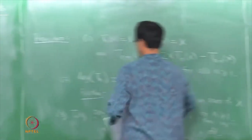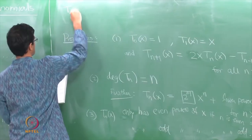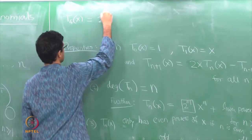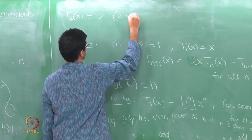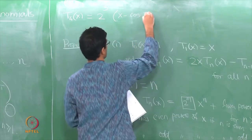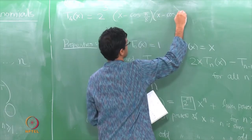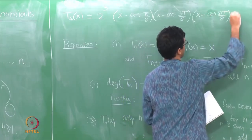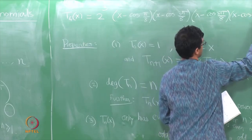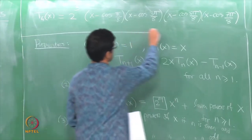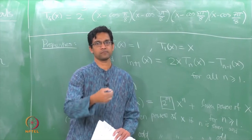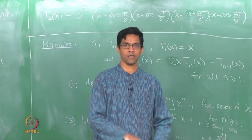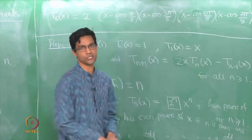Let us observe an example: T_4(x). Plugging into the formula, it is 2^3 (that is 2^{n-1} for n=4) times (x minus cos(pi/8)) times (x minus cos(3pi/8)) times (x minus cos(5pi/8)) times (x minus cos(7pi/8)). That is the factored formula for T_4(x), and of course one can explicitly compute it from the recurrence relation, getting a degree 4 polynomial. It is remarkable that that polynomial actually factorizes in this way.